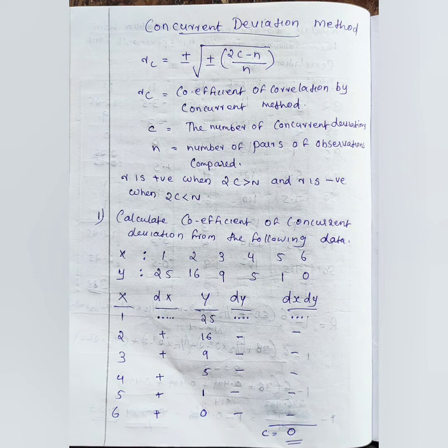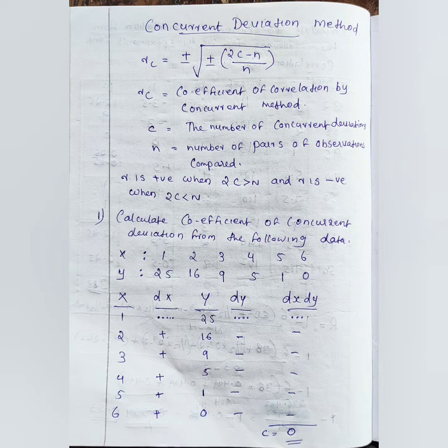Now, check the signs of deviations. We compare 2c to n. If 2c is greater than n, the sign is positive. We will try to find a question — one question. We will calculate the coefficient of concurrent deviation from the following data.